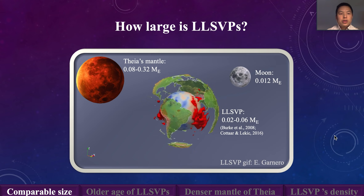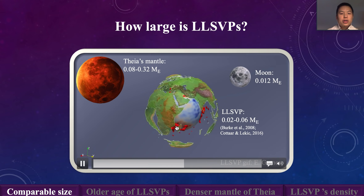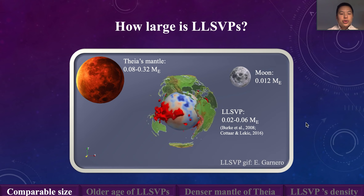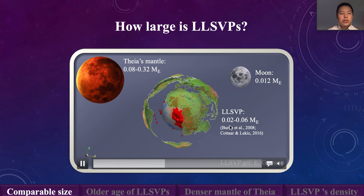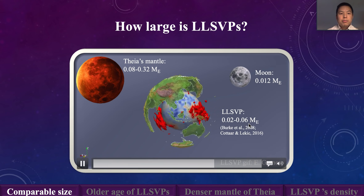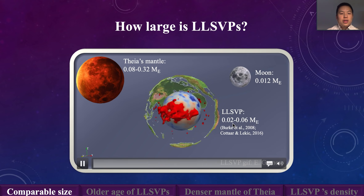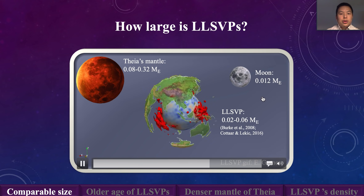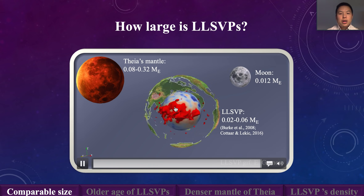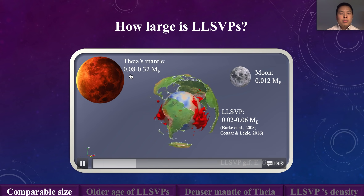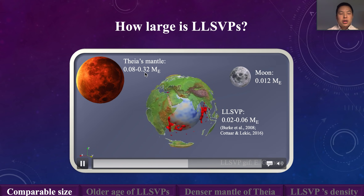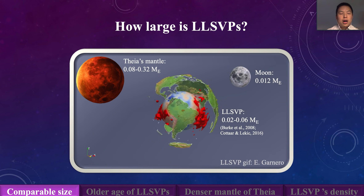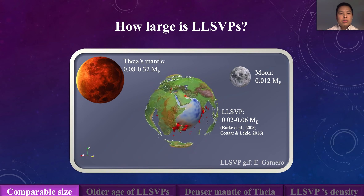The two large low shear velocity provinces — one is beneath the African continent and one is below the Pacific Ocean. The seismic constraints show their volume or mass is about 2% to 6% of the current Earth's mass. So we can see it's clearly larger than the total mass of the Moon. And also, it can be seen that the LLSVP mass is comparable to the Theia mantle, depending on whether it's one size of Mars or four times of Mars. So the main message of this slide is that the LLSVPs are large and they have comparable size to the Theia mantle.